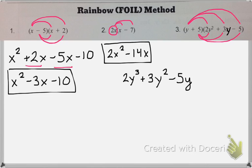So 5 times 2y squared is 10y squared. 5 times 3y is 15y. And then I have minus 25. So there's a lot of terms to keep track of. So now we need to combine like terms.